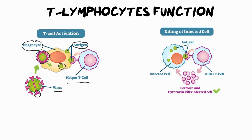When our helper T cells call for help from our killer T cells, here is how the killer T cells get rid of the virus. The killer T is attracted towards infected cells — and remember, it must be a viral infection, because viruses live inside of cells. Phagocytes can deal with pathogens on the outside quite easily, but the problem is when a virus goes inside a cell, your body doesn't know those cells are sick. You have to look out for special signs, and that's what the helper T does.